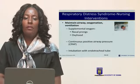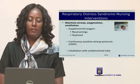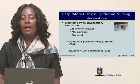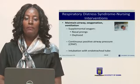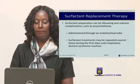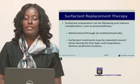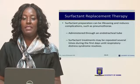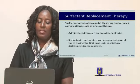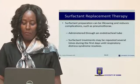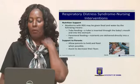Nursing interventions include maintaining the airway and providing supplementary oxygenation via nasal prongs, catheter, CPAP, or endotracheal intubation. There is also a need to replace surfactant to reduce complications such as pneumothorax. Surfactant is administered through an endotracheal tube and may be repeated several times during the first days until respiratory distress syndrome resolves.